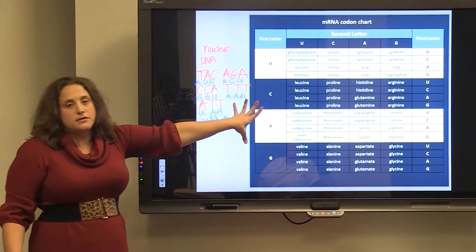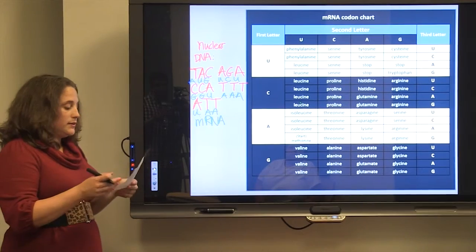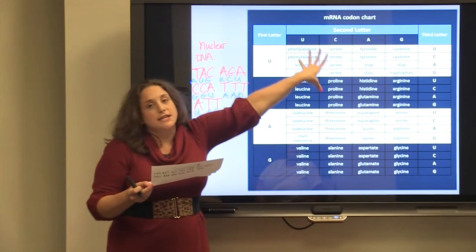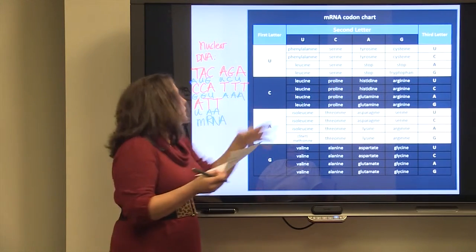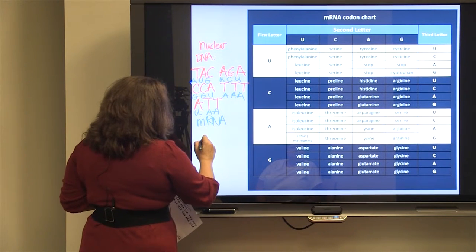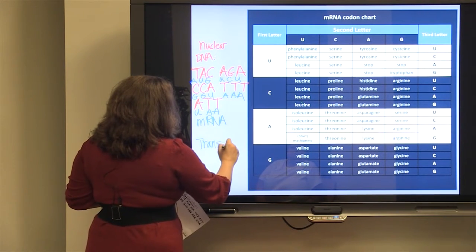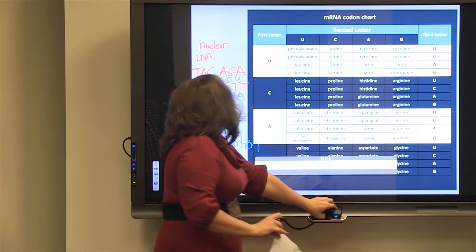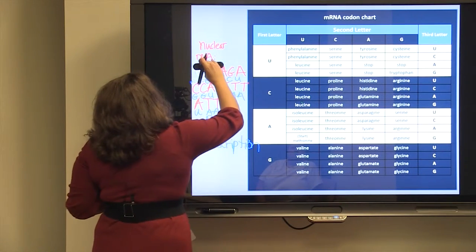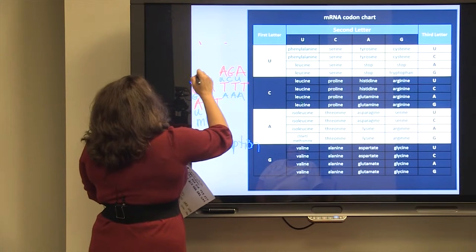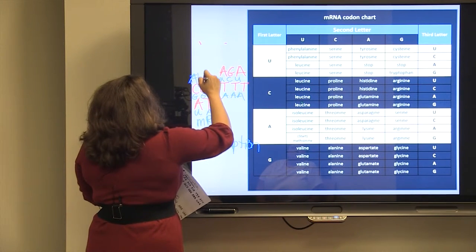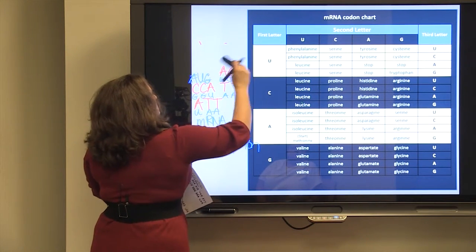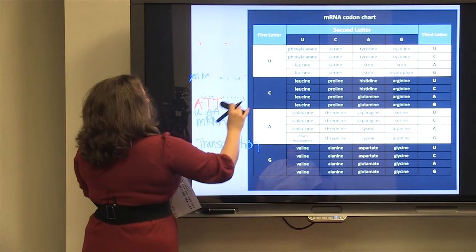Next is how, when we use the codon chart, you use the blue mRNA sequence that we have just transcribed to translate using the codon chart. So, this part was transcription DNA to RNA, and now I've got to erase the DNA, because we're finished with that.